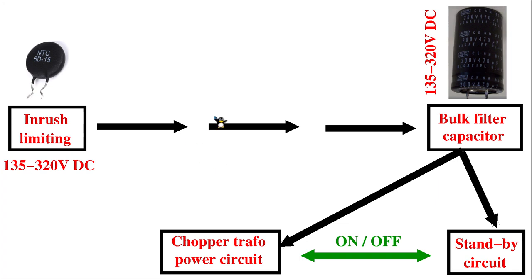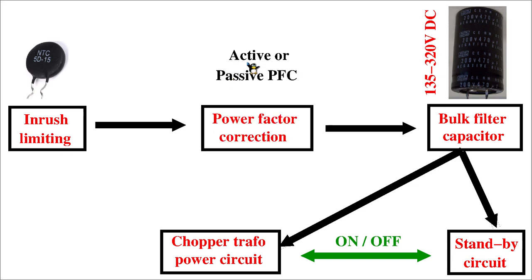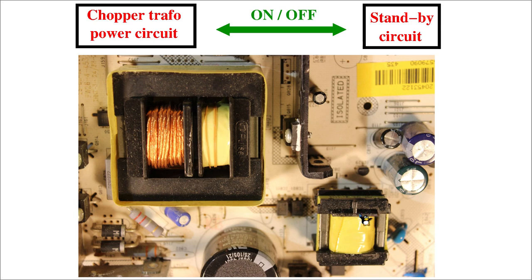Once we fully cover the switch mode power supply block diagram and basics, we will come back to passive and active power factor correction — this material is only shifted to future videos. Now, having established that there is a major difference between the standby circuit and the high-power portion of the SMPS, I will show in future slides that the actual way both transformers are fed from the bulk filter capacitor is very similar.